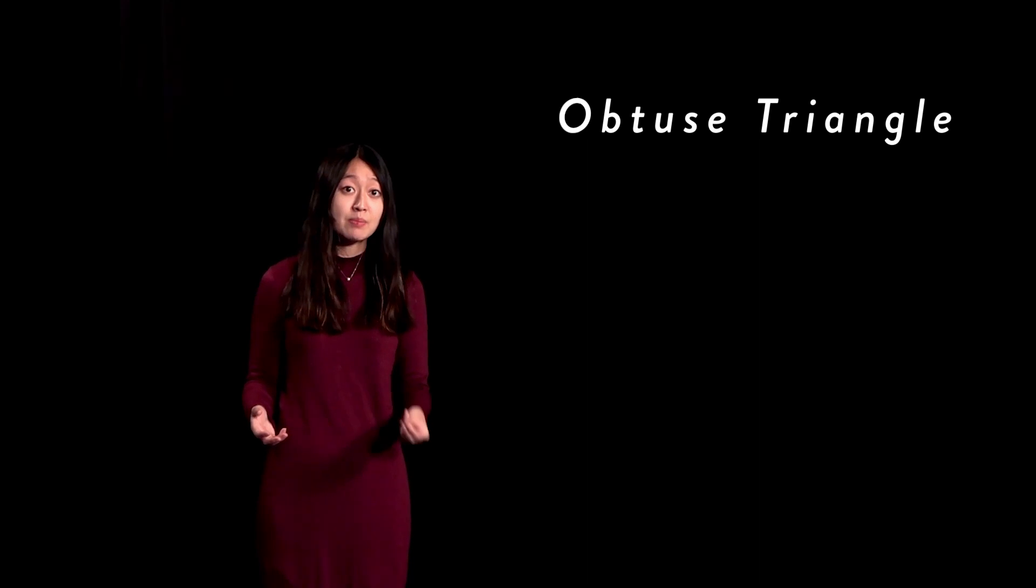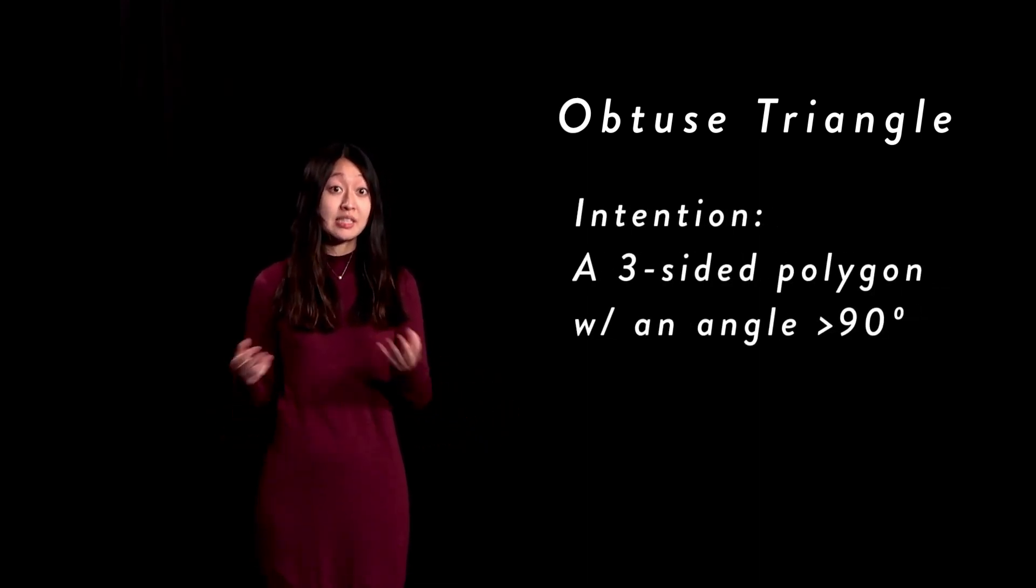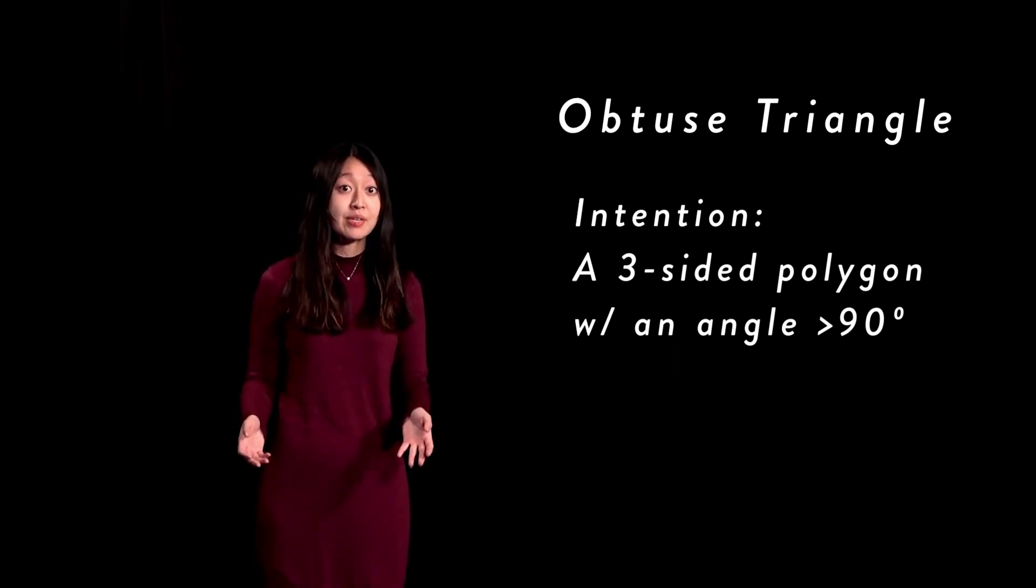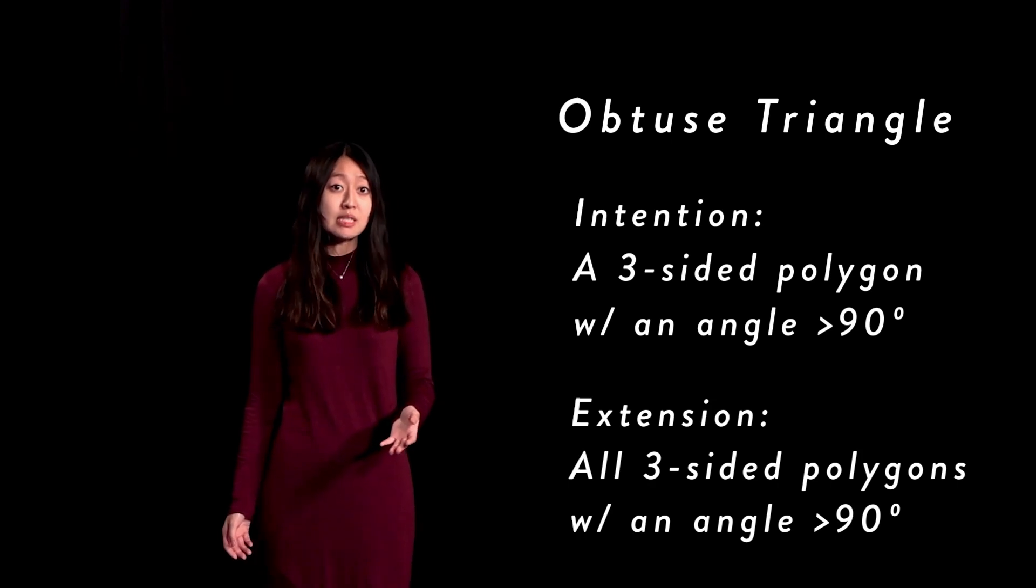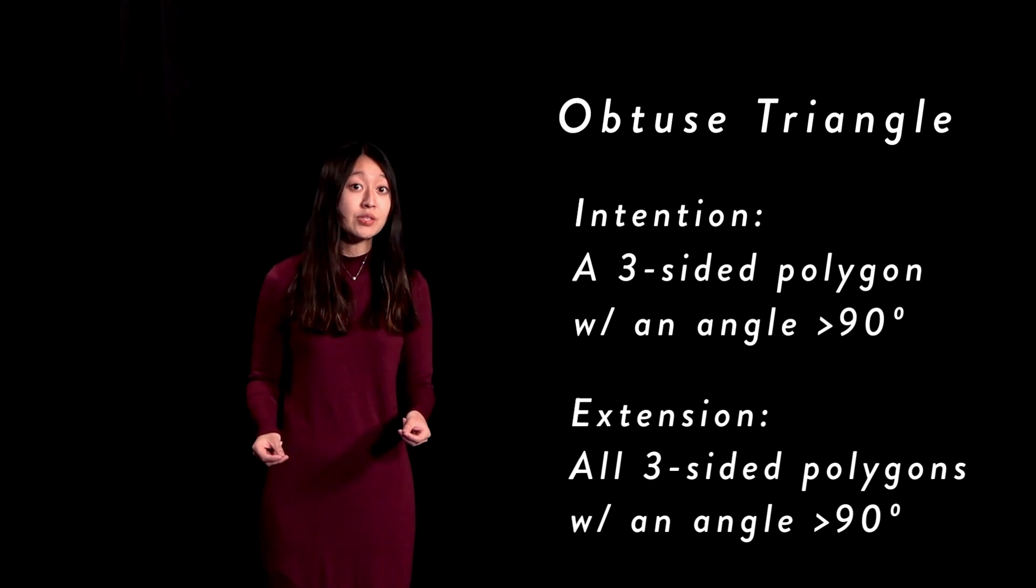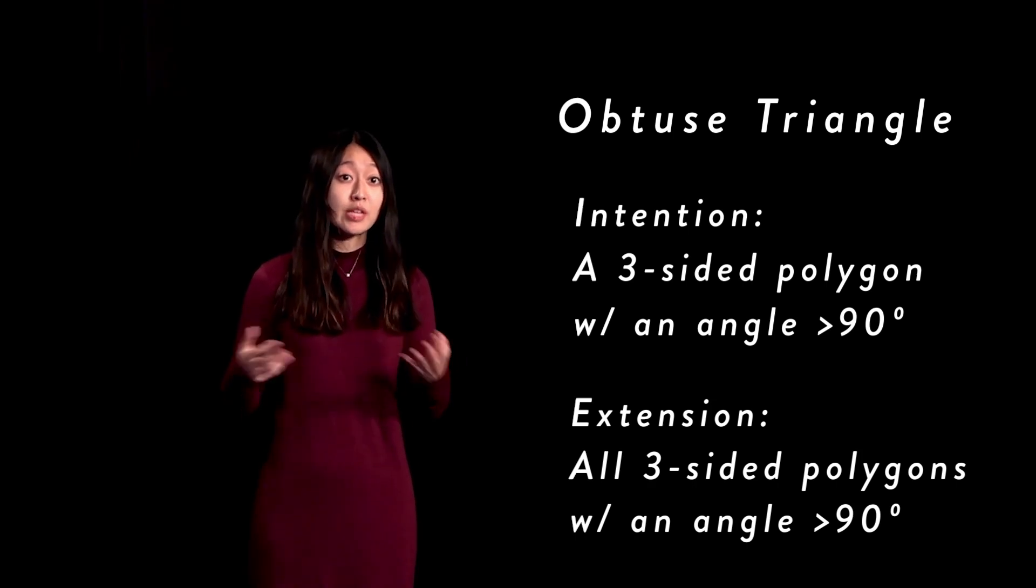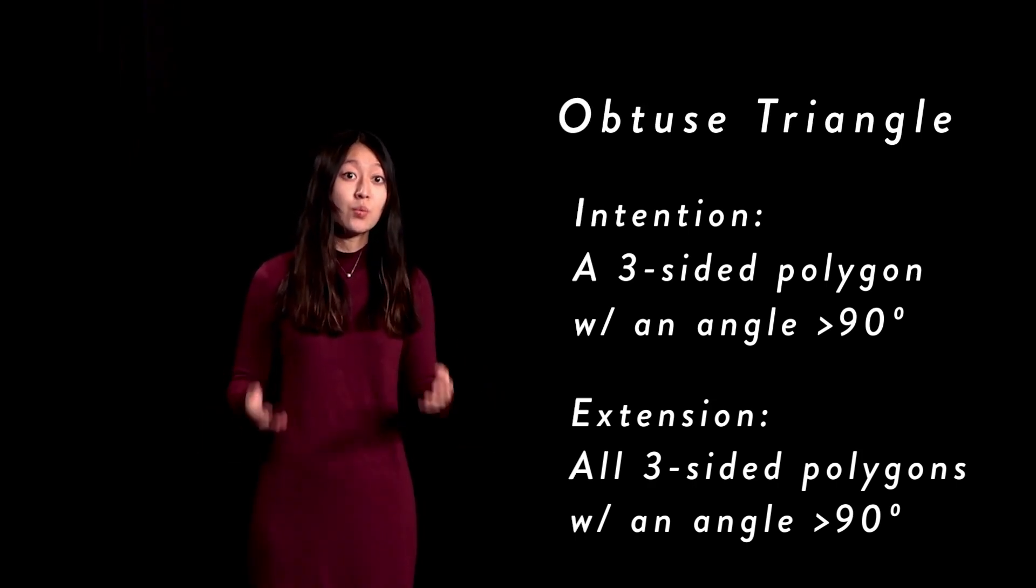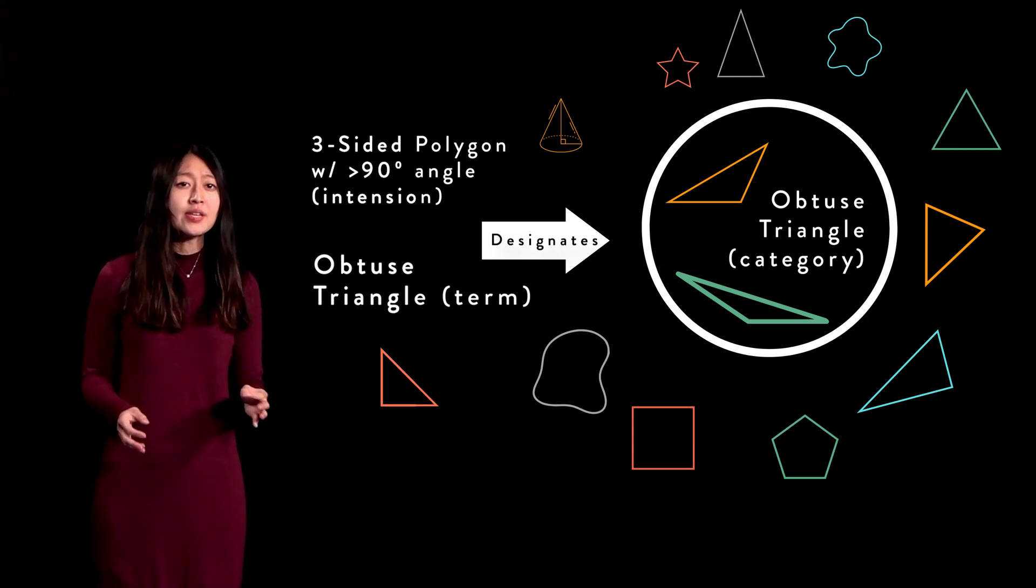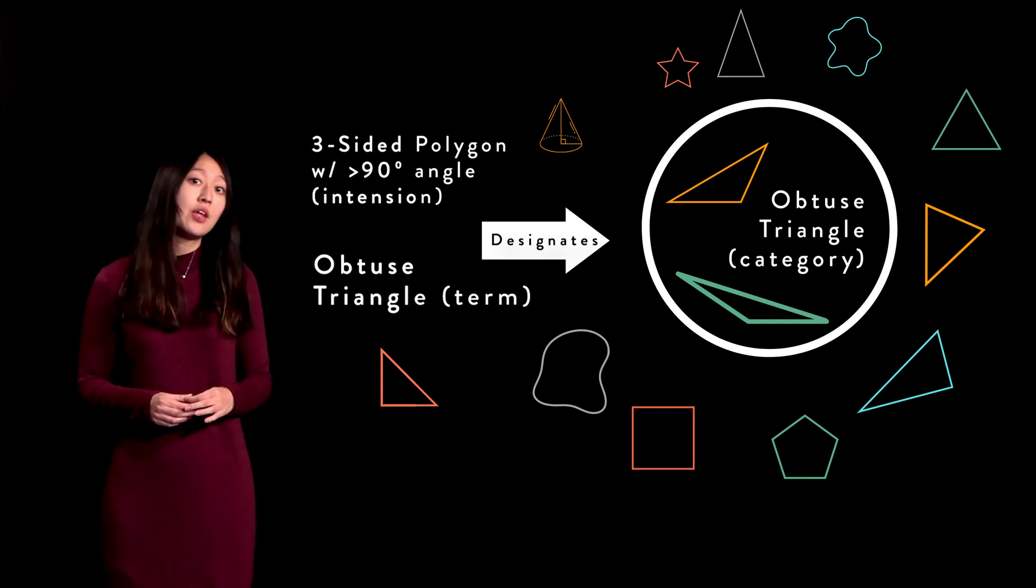For instance, consider an obtuse triangle. Obtuse triangle is a more specific term than triangle. It not only is a three-sided polygon, but it also has an angle larger than 90 degrees. Thus, the intension has become more specific than that of a simple triangle. In other words, things must have more properties to be in the category obtuse triangle. However, because the meaning of the term has become more specific, the collection of things that the term refers to in the world decreases. This general relation holds for almost all terms. We now have this. Notice that the category has become much smaller because that which is limiting it, the intension, is more specific. There are now triangles outside of the category because they are not obtuse triangles.